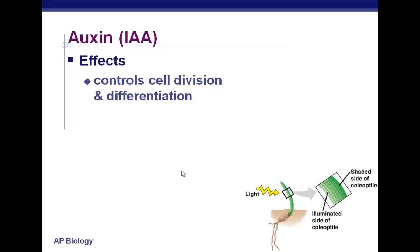Differentiation is when a cell decides what it's going to do. You are very differentiated — you have lots of different cells with different tasks. Your blood cells have a very different task than your bone cells, and your skin cells have a very different task than your eyeball cells. That's differentiation. As for the phototropism, it was a bit of a confusing idea, so I'd recommend checking out my answer key on Moodle if you had trouble.